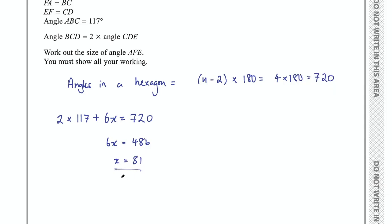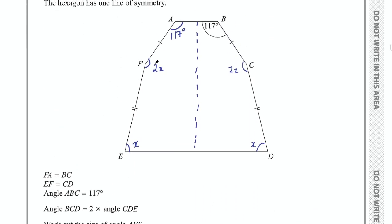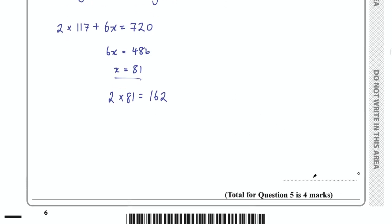And you might think okay, all done now, but hold on—you need to remember to answer the question. Remember, the question says work out the size of angle AFE. So go back to the diagram—remember AFE was 2 lots of x, so we need to actually work out 2 lots of x here. So 2 multiplied by 81, that's going to be 162. So final answer there, 162 degrees.